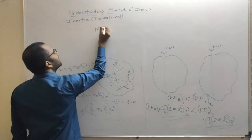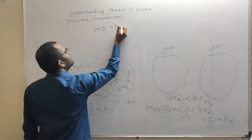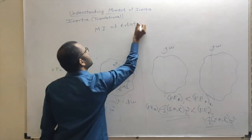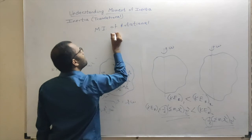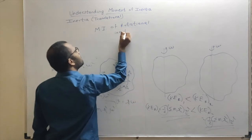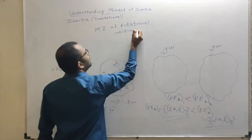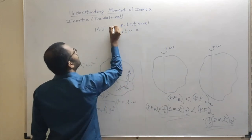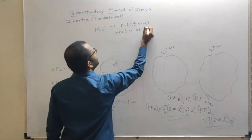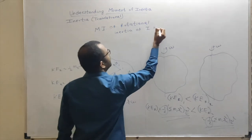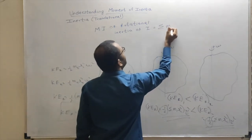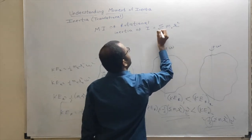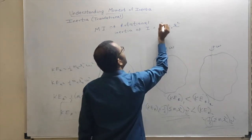Moment of inertia — also called rotational inertia, simply denoted by the letter I — equals summation of mi ri squared, where i varies from 1 to n. It not only depends on the masses of the particles but also on the distribution of the particles from the axis of rotation.